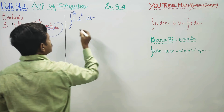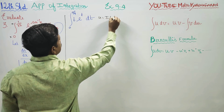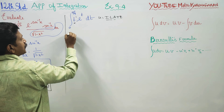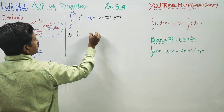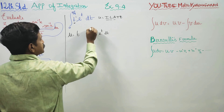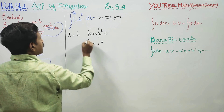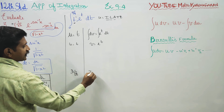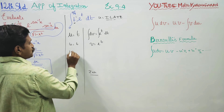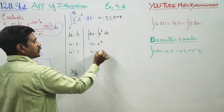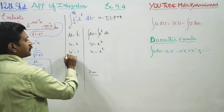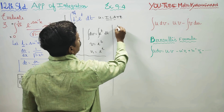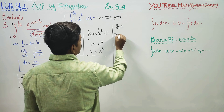Before going for Bernoulli's formula, we must choose u and dv. Using the ILATE rule: Inverse, Log, Algebraic, Trig, Exponential. t is algebraic, so u = t. The balance is dv = e^t dt. Integrating dv gives v = e^t. Now for the differentiation column: u' = 1, then differentiating again gives 0.